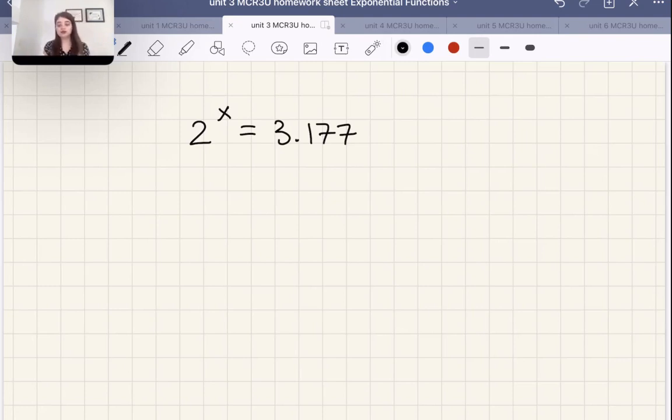Well, the only way, unless you've already learned logarithms, that you would know to solve it so far is just do trial and error to think, it's got to be greater than 1 and less than 2. So let's try 1.5. That's not quite right. Let's try 1.7. Not quite right. We do trial and error to solve for something like this.